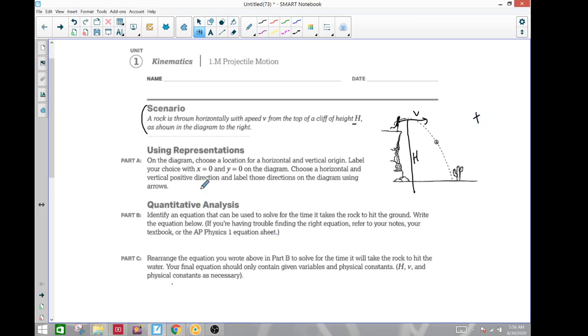On the diagram, choose your horizontal and vertical origins. Label your choice of x0, y0. You can have multiple options here, any option really, but I'm going to take this point right here as my origin of zero. To my right is going to be my positive x, and up is going to be positive y.